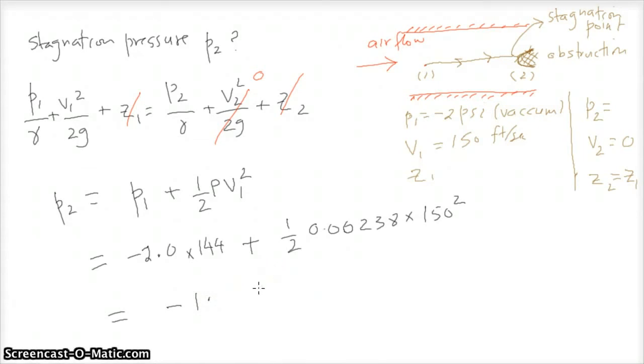Actually, it gives us the pressure of minus 261 pounds per square feet, which is equal to minus 1.81 PSI.